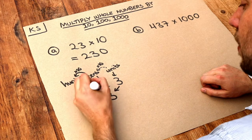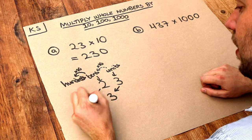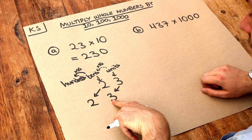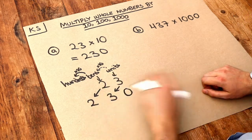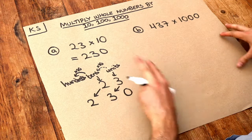So that tens digit of 2 then becomes the hundreds digit, so we've got 200, three tens, and we've now got no units. So we can see we get 230. That's why it works.